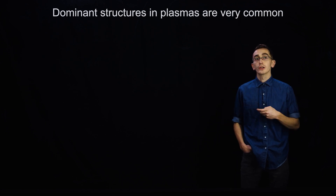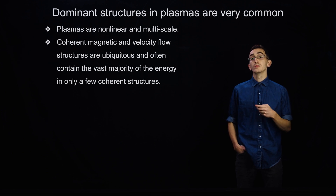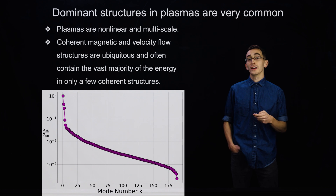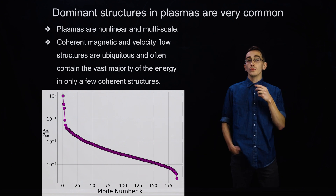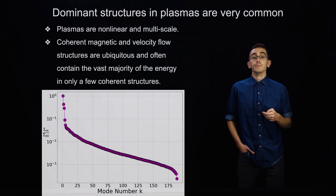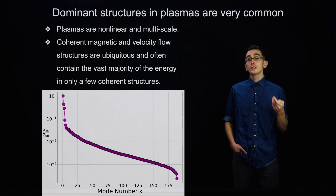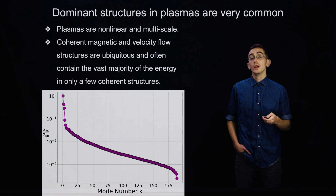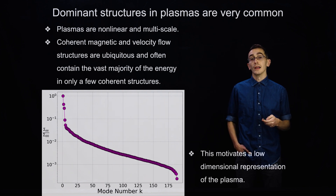I'm going to try to convince you that dominant structures in plasmas are very common. Plasmas are nonlinear and multi-scale. Coherent magnetic and velocity flow structures are ubiquitous and often contain the vast majority of the plasma energy in just a few of those coherent structures. This picture, at least for the HIT-SI experiment, shows the singular value decomposition of an experimental discharge. On a logarithmic scale, you can see there are maybe four important singular values and then a long tail. The takeaway is that with just three to five modes, we can describe most of the magnetic energy of the plasma, which motivates a low-dimensional representation.